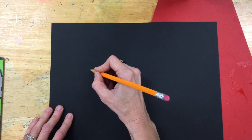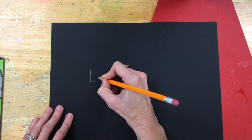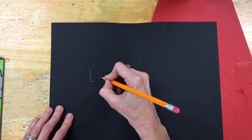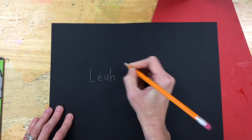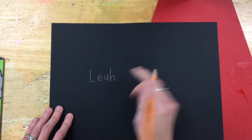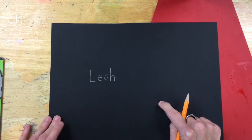So I'm going to write a pretend name. See how pencil shows up on black paper? Isn't that cool? I'm going to write Leah because I think that's a pretty name. And then we're going to write our teacher's name underneath that.